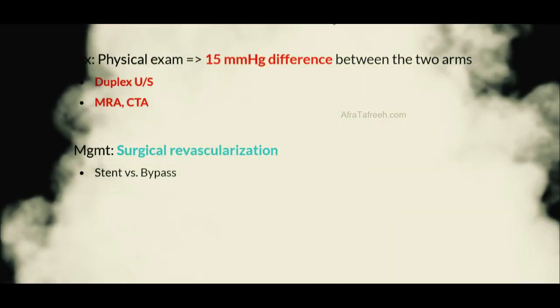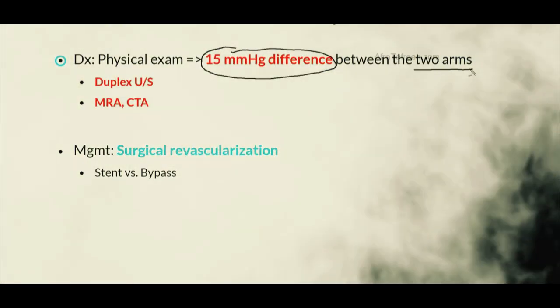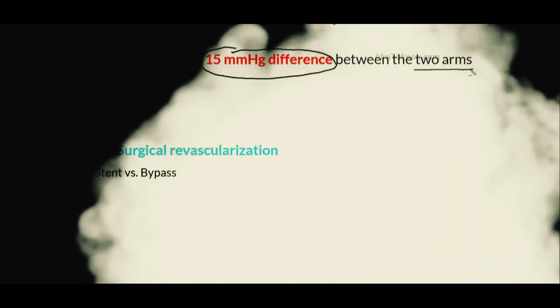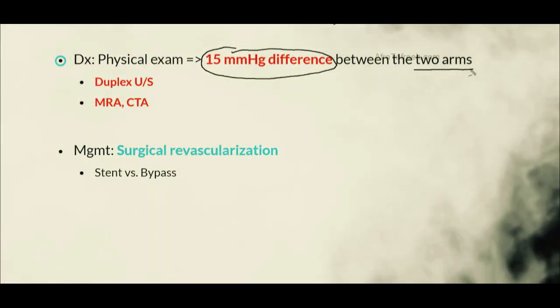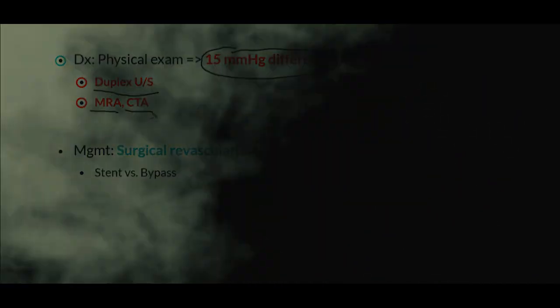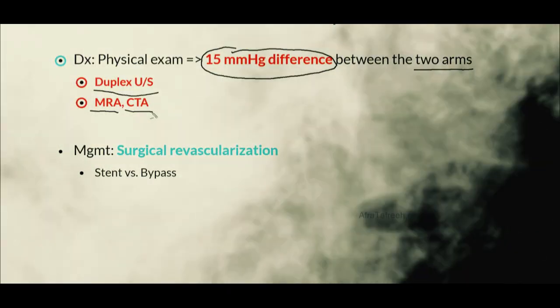Consistent with this on physical exam, patients with subclavian steal syndrome are classically going to have a 15 millimeter mercury difference between their two arms, as the arm on the affected side is going to have a lower measured blood pressure. Additionally, in these patients we should perform a duplex ultrasound, as well as in some cases an MRA or CTA, in order to get visualization of the affected blood vessels, which in this case is going to be the proximal subclavian artery.